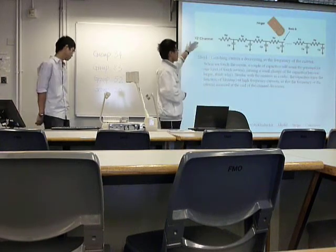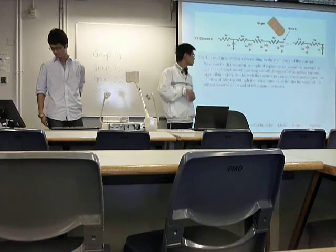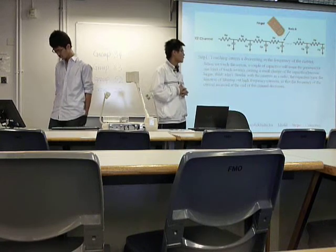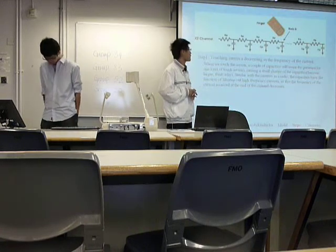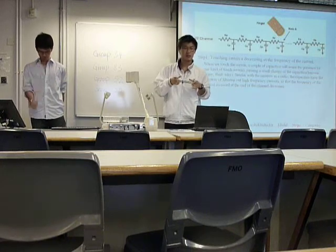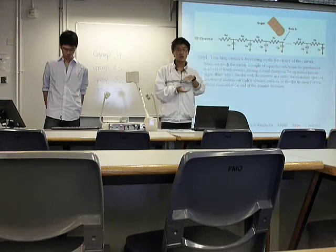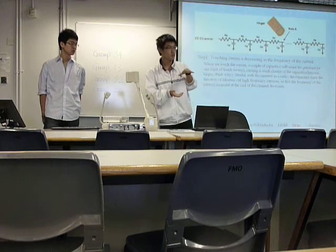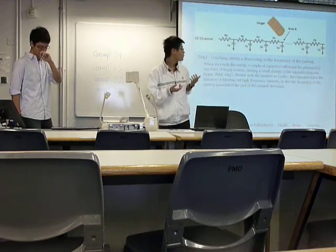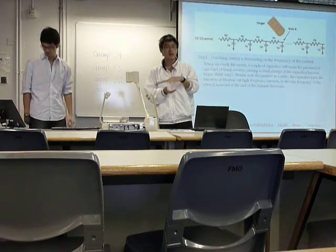Let's look at this picture. The first step of using the touch screen is to touch it. Our touching causes a decrease in the frequency of the circuit. That means if we touch the screen, a group of capacitors will sense the pressure. That causes a reduction in the distance between the two pieces of metal — do you remember the formula? — which will cause an increase in the capacitance.